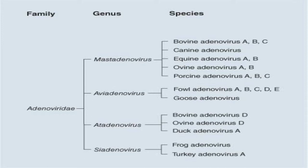Within the family Adenoviridae, the genus Mastadenovirus includes species infecting domestic animals such as Bovine adenovirus A, B, and C; Canine adenovirus; and Porcine adenovirus A, B, and C. The genus Aviadenovirus includes Fowl adenovirus A, B, C, D, and E — five strains.